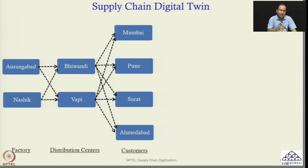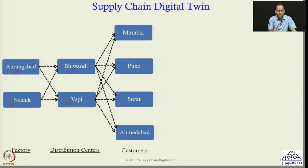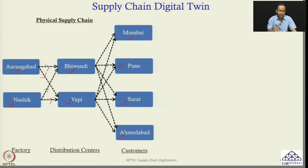Let us see a sample supply chain digital twin and how it looks. Consider this diagram: I have two factories located in Aurangabad and Nasik. These two factories are sending finished goods to Vivandi and Vapi distribution centers. Then from these two distribution centers, the products are being transported to Mumbai, Pune, Surat and Ahmedabad to satisfy customer demand. This is the physical supply chain — I can see the movement of products from factory to DC and from DC to various customer locations.